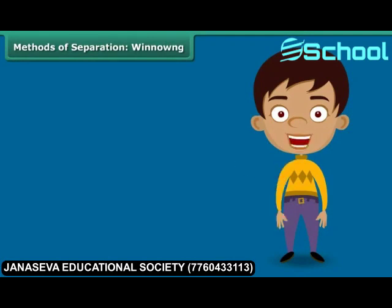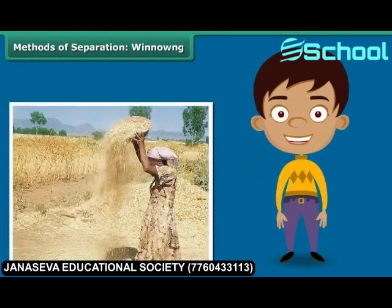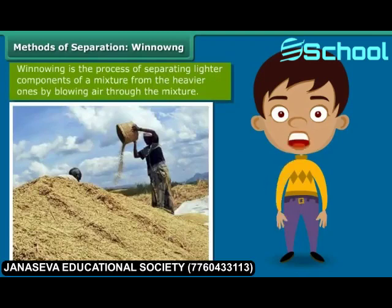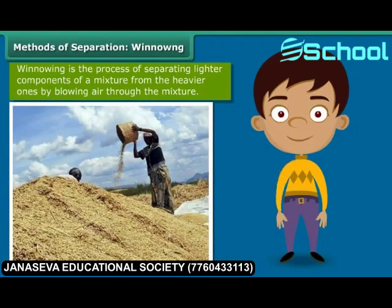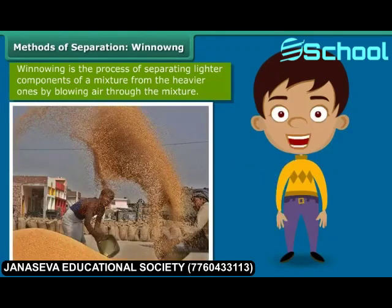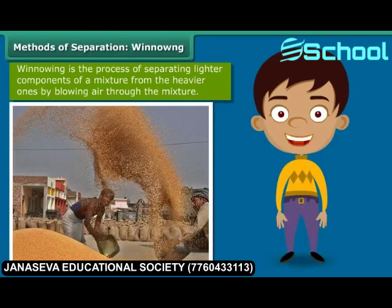During train trips through the countryside, you would have noticed women standing at a height, shaking a basket held over their heads continuously. They are separating the grain from the husk by simply allowing the wind to blow away the husk and other lighter impurities. The heavier grain falls down on the ground in a heap. This process of separating impurities from grain by allowing a current of air to blow away the lighter impurities is known as winnowing.